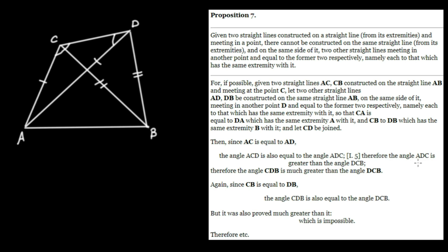This is what Euclid says: the angle ACD is also equal to the angle ADC. Then he says therefore the angle ADC is greater than the angle DCB. Why does he say this? Notice that the angle DCB is a part of the angle DCA — it is but a part of the angle DCA. Therefore DCB must be lesser than DCA, but DCA is equal to CDA, so ADC must be greater than DCB.